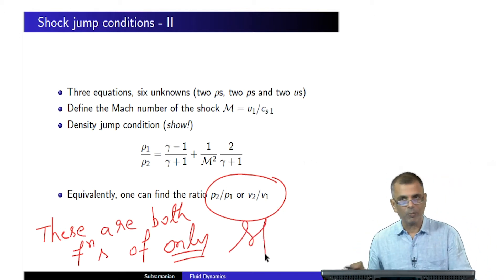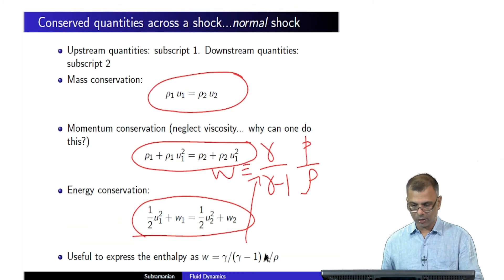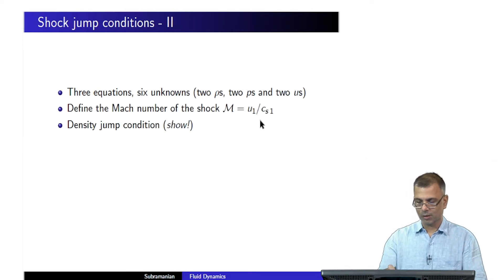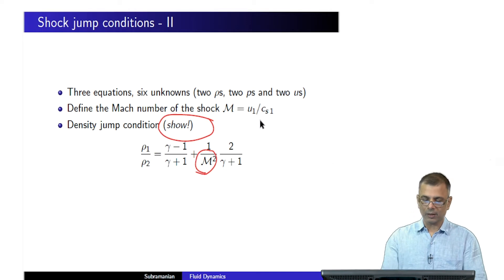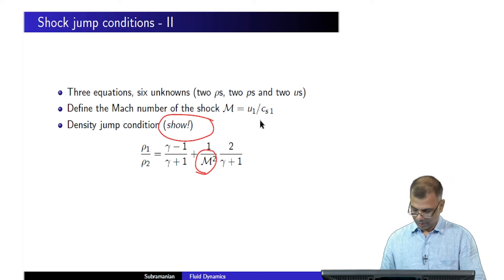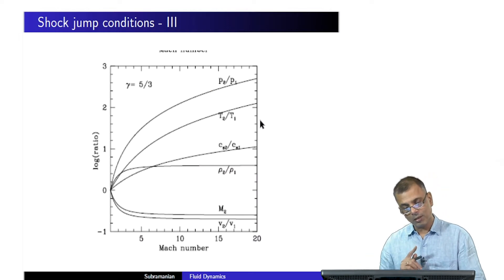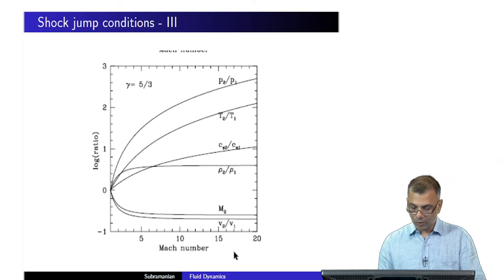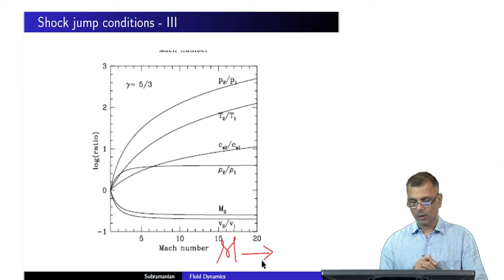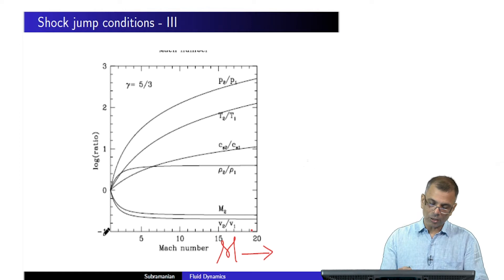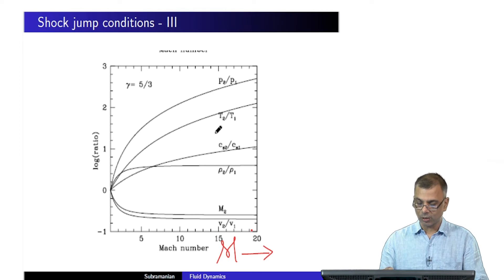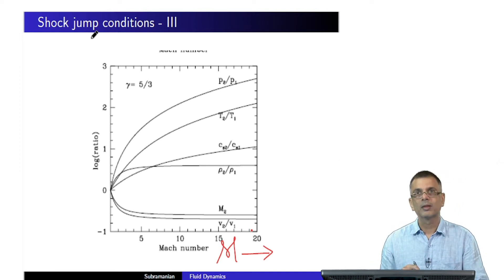The Mach number M is the only thing that matters. You can recast these equations in terms of the Mach number. The Mach number is plotted on the x-axis and the ratios — pressure jump, temperature ratio, jump in sound speed, jump in density — are all plotted on the y-axis.